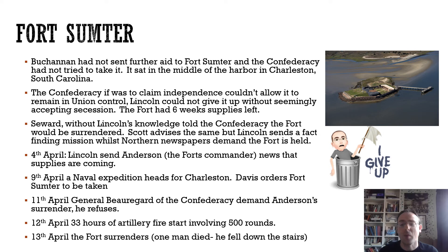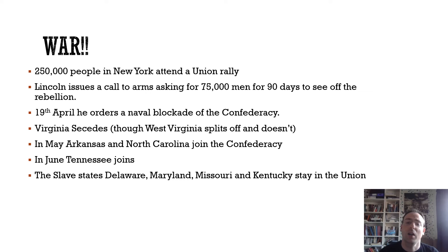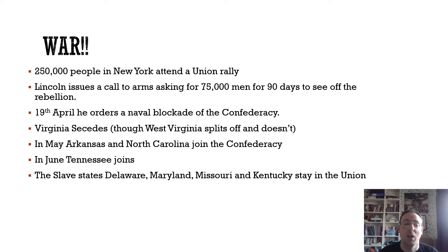The fort surrendered, and far more significantly, this was the beginning of the war. The North was furious. A rally in New York — not necessarily seen as a hotbed of northern support, given New York's connections to the cotton export trade and financing of planters — saw 250,000 people turn up demanding action. Lincoln called for 75,000 men to serve for 90 days to see off the rebellion, which proved enormously optimistic in both numbers and time. On the 19th of April he declared a naval blockade on the Confederacy, which would prove really important.